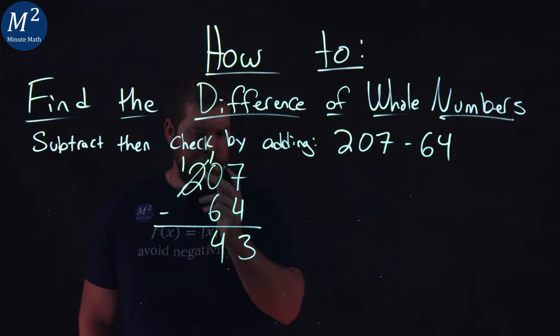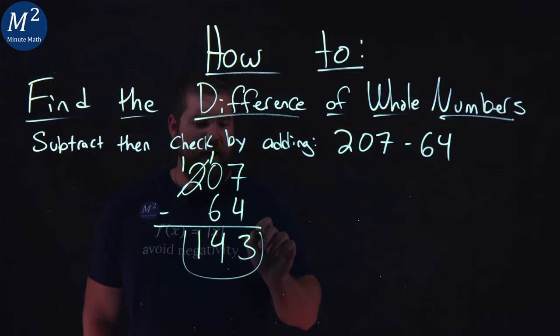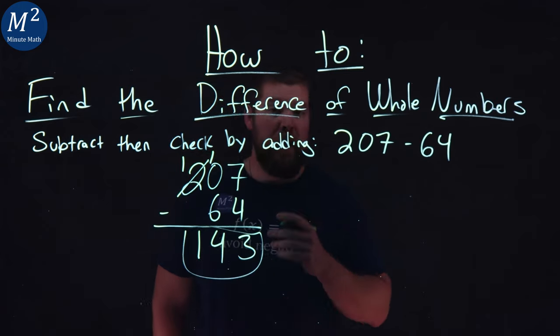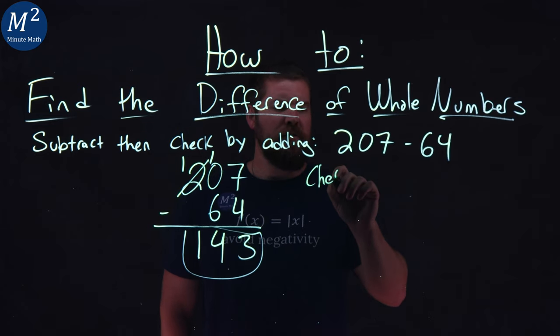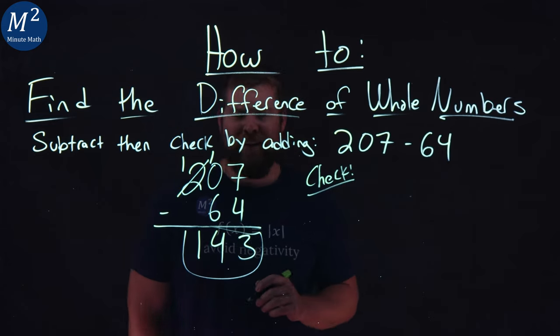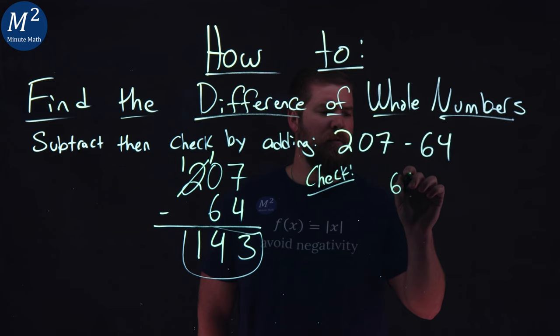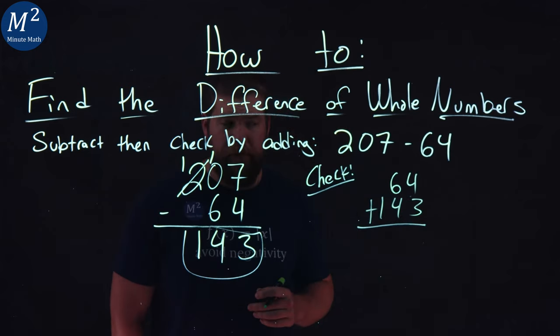One minus nothing is just one, and we have 143 as our answer. Now they asked us to check here. I'm going to take 64, and I'm going to add to it 143, making sure my digits line up.